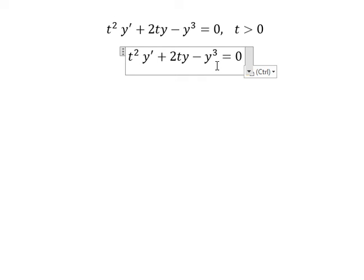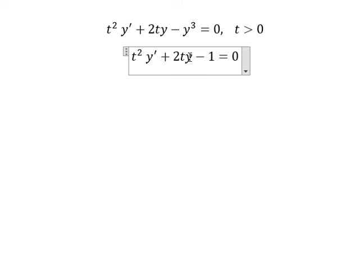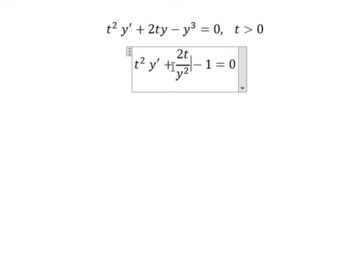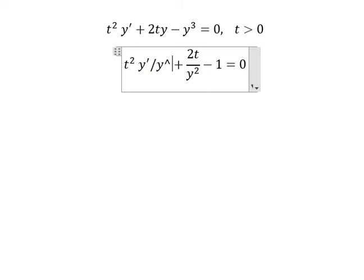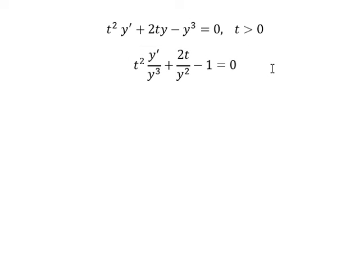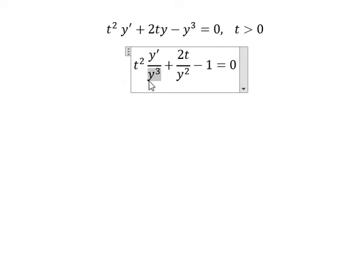So we need to divide both sides by y to the power of 3. Next we see that 1 over y squared, and first the derivative of y over y to the power of 3.